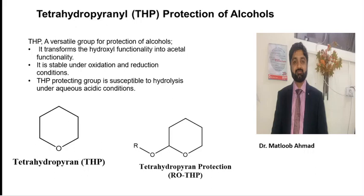Let us first discuss the structure of tetrahydropyran. This is the THP molecule shown here. As we can notice, it is a heterocyclic molecule. Heterocyclic compounds are compounds having cyclic rings that contain one or more atoms other than carbon atoms. Tetrahydropyran is a heterocyclic compound, and importantly it is a saturated ring — there is no double bond present — so its behaviour is quite different from aromatic compounds.